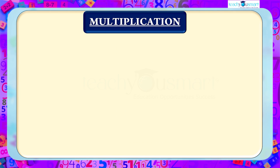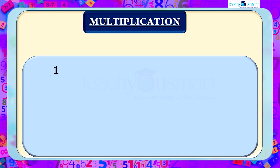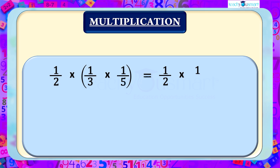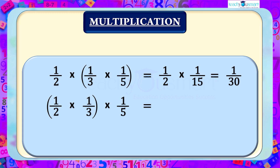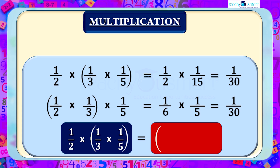Let's examine the multiplication of rational numbers next, using the same three numbers 1/2, 1/3, and 1/5. We can group them as either (1/2 × 1/3) × 1/5 = 1/2 × 1/15 = 1/30, or 1/2 × (1/3 × 1/5) = 1/6 × 1/5 = 1/30. That is, (1/2 × 1/3) × 1/5 = 1/2 × (1/3 × 1/5).